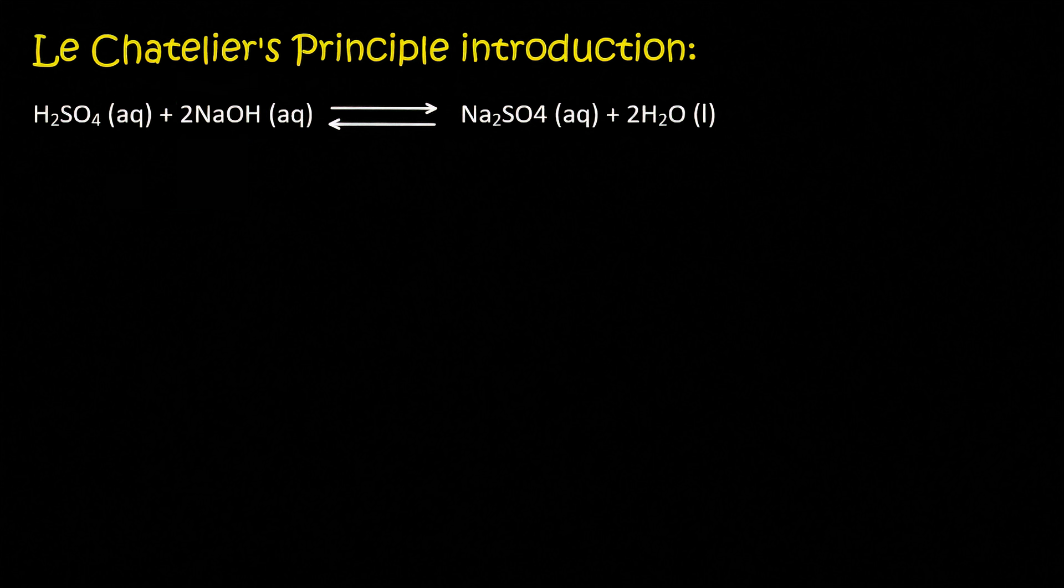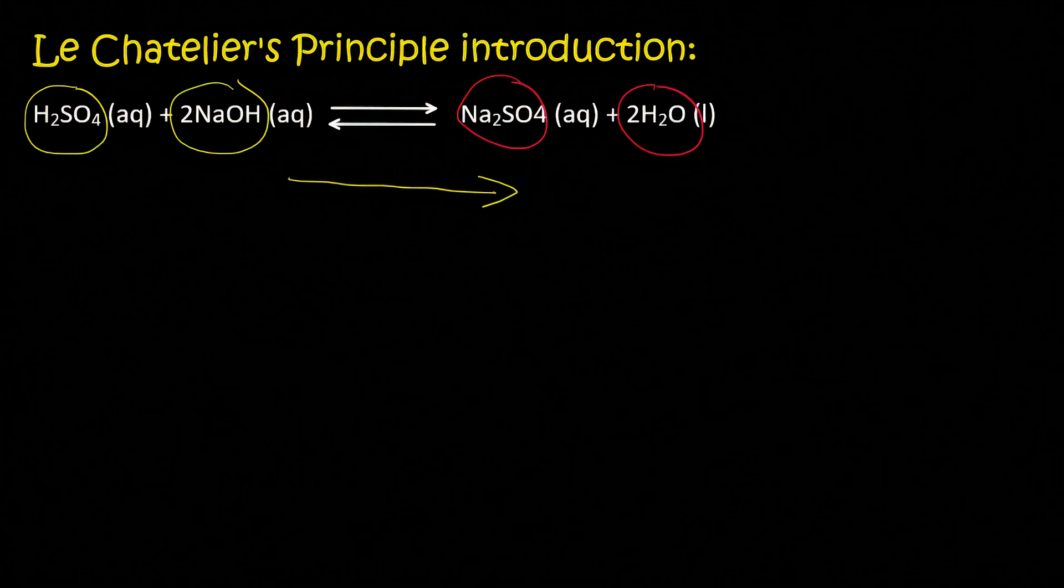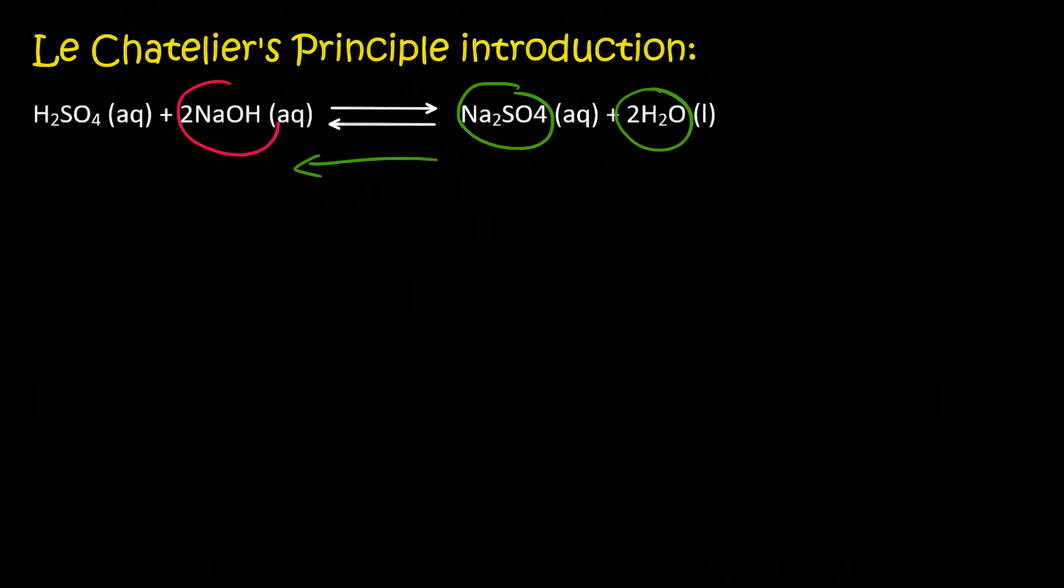If the forward reaction is favored, so the one that goes this way, then we use these two and we produce these two. If we go this way, then we will use these two to produce these two.